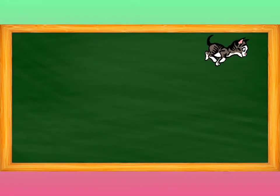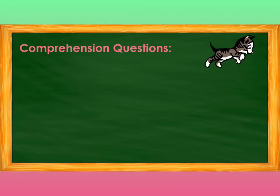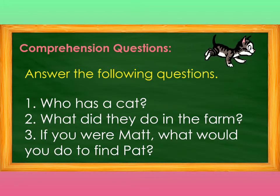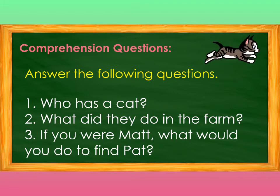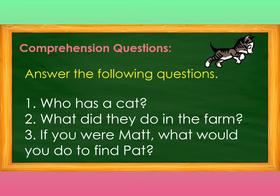How do you find the poem? Right now, let us proceed to comprehension questions. Answer the following questions. Number 1: Who had a cat? Number 2: What did they do in the farm? Number 3: If you were Matt, what would you do to find Pat?